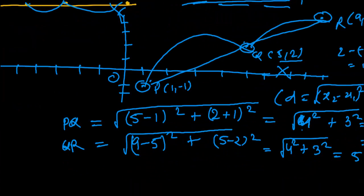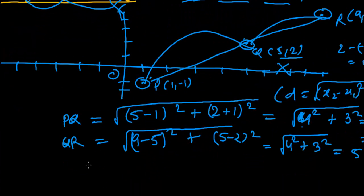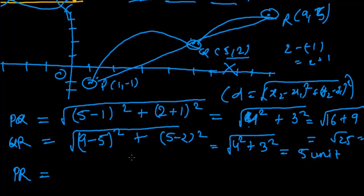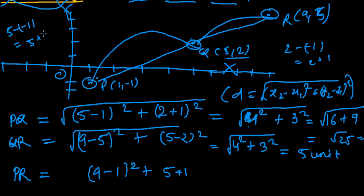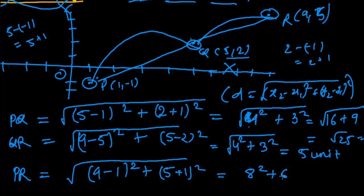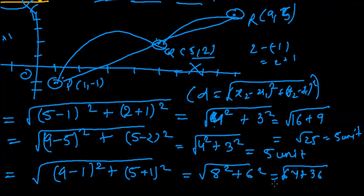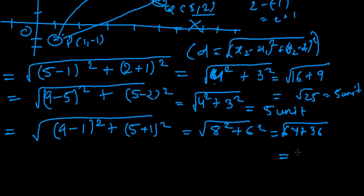Now let's find PR. Taking P at (1, -1) as (x1, y1) and R at (9, 5) as (x2, y2): PR equals the square root of (9 minus 1) squared plus (5 minus minus 1) squared, which is the square root of 8 squared plus 6 squared, equals the square root of 64 plus 36, equals the square root of 100, which is 10 units.